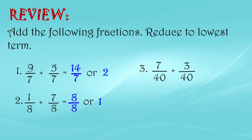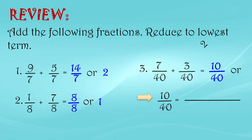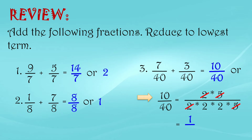So when we simplify, we go through a few steps. Add the numerators: 7 plus 3 equals 10, then copy the denominator which is 40, giving us 10 over 40. To simplify, we factor: 10 = 2 × 5 and 40 = 2 × 2 × 2 × 5. Cancel the common factors — everything in the numerator cancels, leaving 1, and the denominator has 2 × 2 = 4. So the lowest term of 10 over 40 is 1/4.